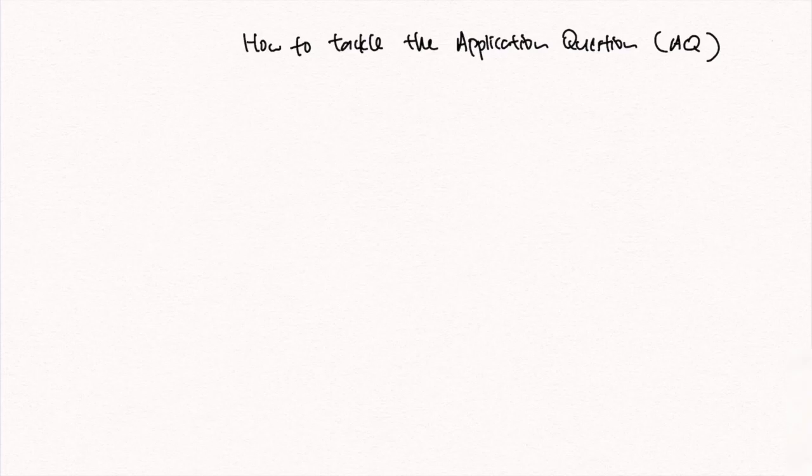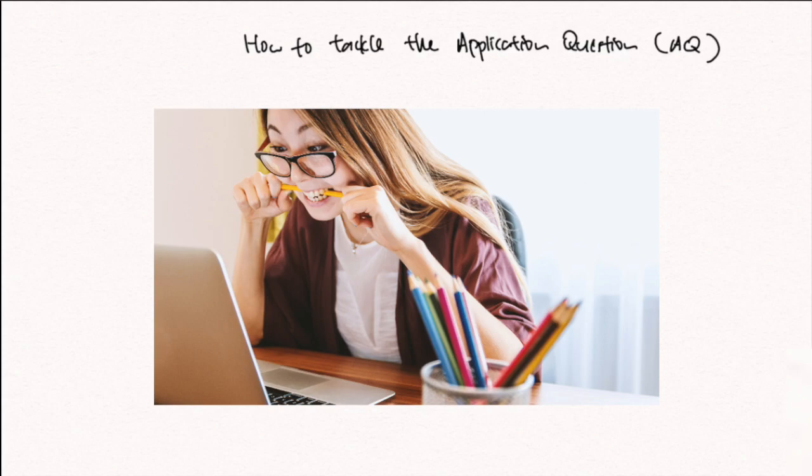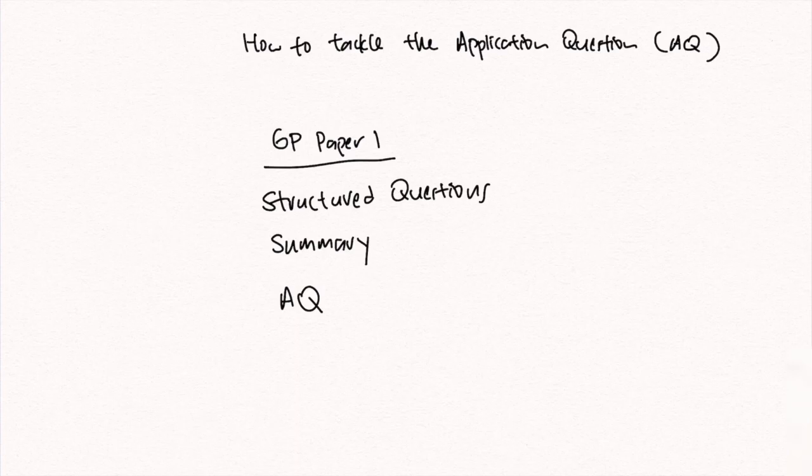In this video, I will be discussing how we can tackle the Application Question, or AQ, in short. Most students find the AQ very daunting and are unsure of how they can tackle it. The AQ is the last portion of your GP Paper 1, and when you reach it, you would have already been mentally drained from answering the structured questions and summary. However, fret not — there is a simple structure that we can always use to tackle the various forms of the AQ question, and I will be explaining it in this video.